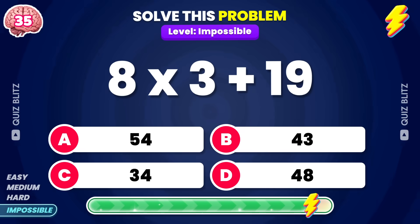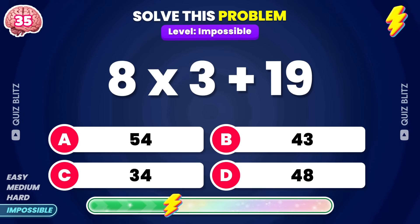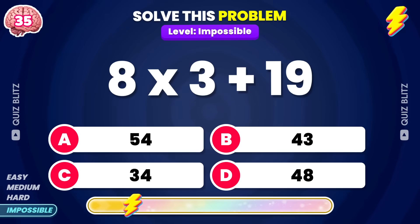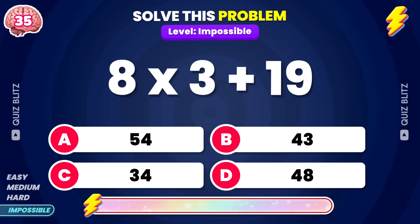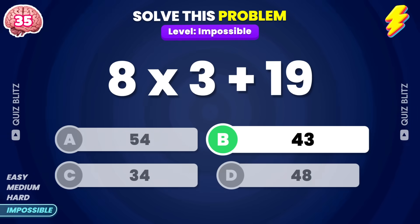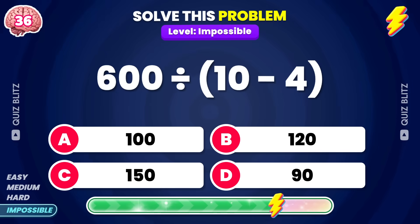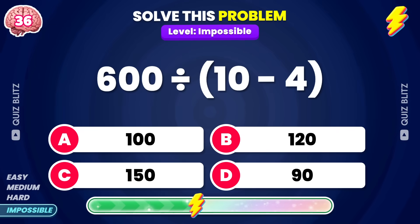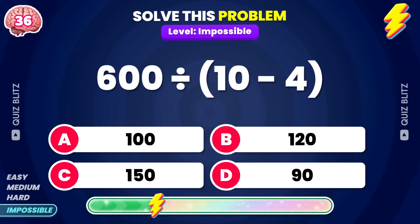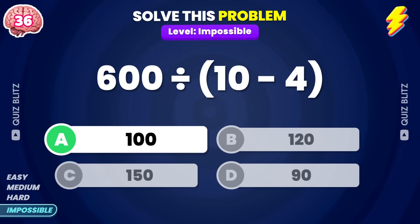8 times 3 plus 19? The result is 43. 600 divided by 10 minus 4. The result is 100.